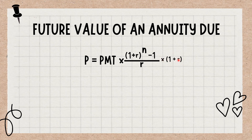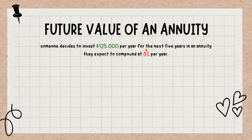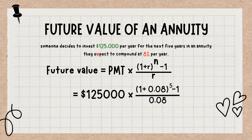Assume someone decides to invest $125,000 per year for the next 5 years in an annuity they expect to compound at 8% per year. In this example, the series of payments is a regular annuity in which the payments are made at the end of each period. The expected future value using the formula is: Future Value = $125,000 × ((1 + 0.08)^5 − 1) / 0.08 = $733,325.